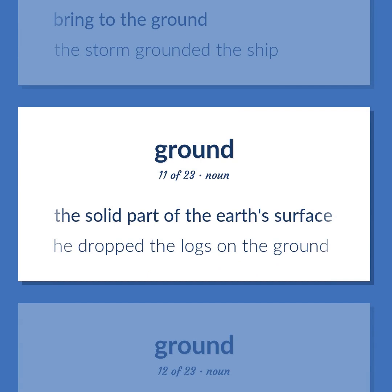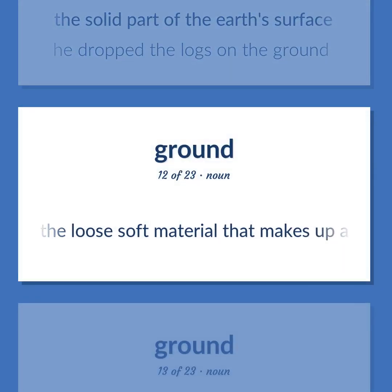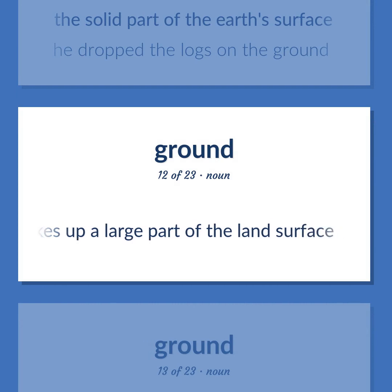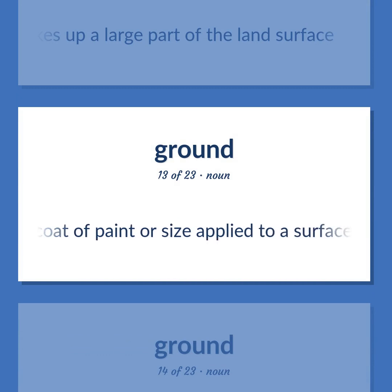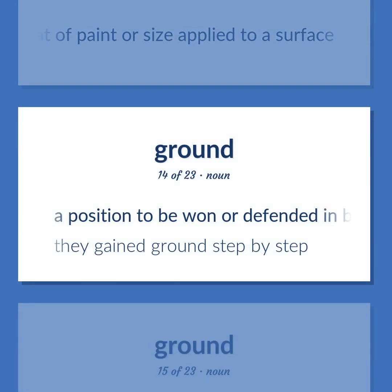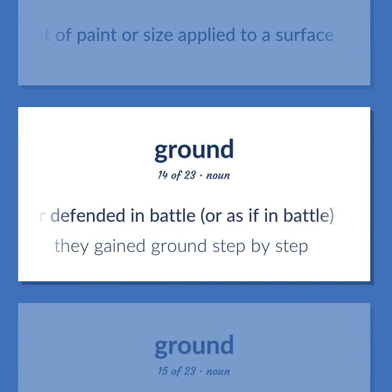The solid part of the earth's surface. He dropped the logs on the ground. The loose soft material that makes up a large part of the land surface. The first or preliminary coat of paint or size applied to a surface. A position to be won or defended in battle, or as if in battle. They gained ground step by step.